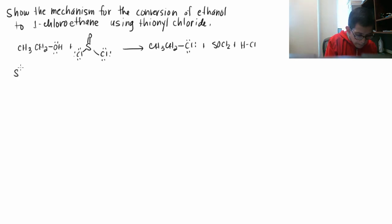Step one. CH3CH2OH, we have two lone pairs on the oxygen. Then S double bond O and Cl and Cl. You do have a lone pair on the sulfur.